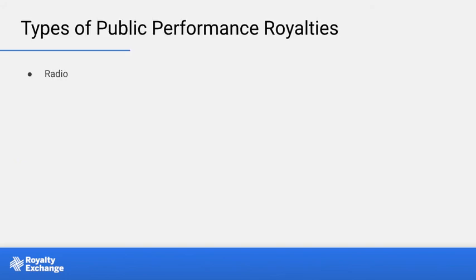Public performance royalties collect from multiple sources, including radio stations, TV networks, bars and clubs, restaurants, music venues, and streaming sites like Pandora or Spotify. All of these pay public performance royalties as a regular cost of doing business. If a business in any way, shape, or form plays music as a way to enhance their business to the public, they are required by law to obtain a public performance license from the copyright holder.